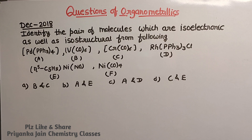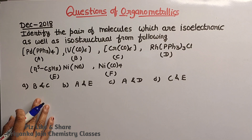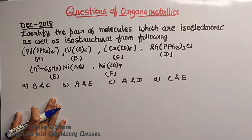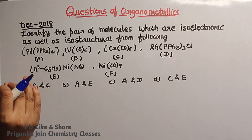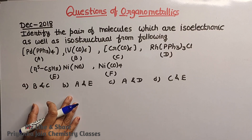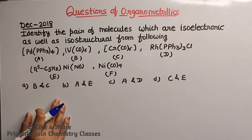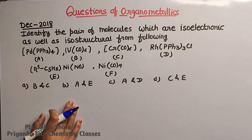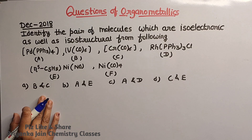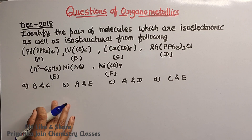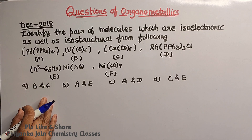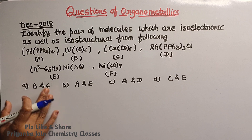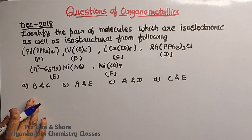Here I have taken questions on organometallics, and this question is from December 2018. The first important thing in organometallics that is asked is the total valence electrons. You should know how to count total valence electrons, how to find metal-metal bonds, and how to find isolobal analogy. These are important things because questions are asked from them.